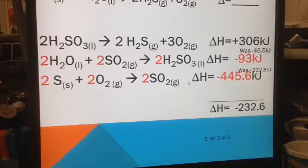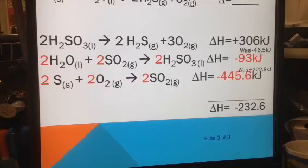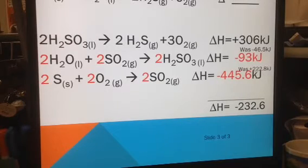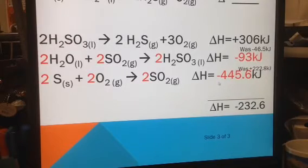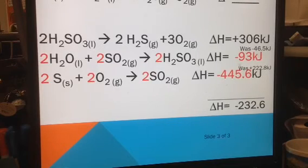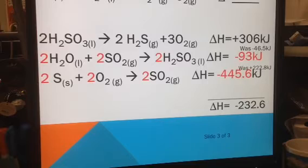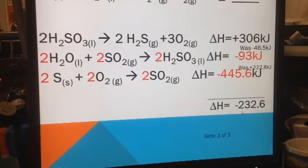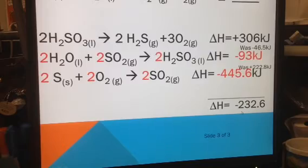And this one not only gets flipped, it got times by 2, so the number was a positive 222.8, and now it is a negative 445.6. When you add these up, your delta H for your unknown equation is a negative 232.6.